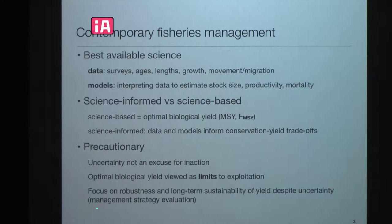One of the stories I'll tell you later is that despite making pretty strong conservation-yield trade-offs on the side of conservation, we still might have some really difficult choices to make. Being precautionary is almost universal now, at least in US, European, and Canadian fisheries — we can't use uncertainty as an excuse for inaction. Optimal biological yield is seen more as a limit to exploitation than a target, and the focus is more on building robust harvest strategies for long-term sustainability.